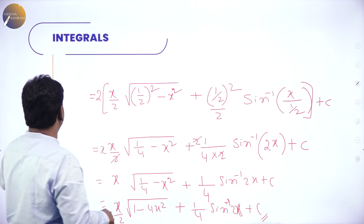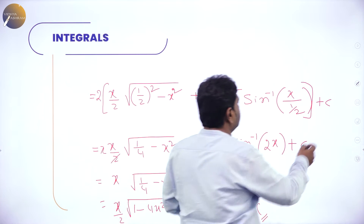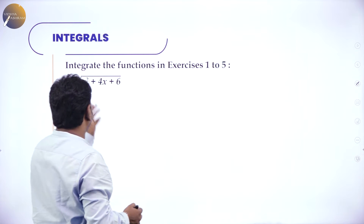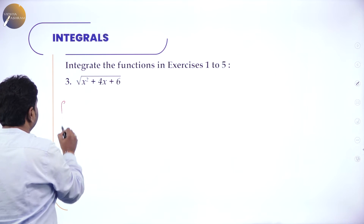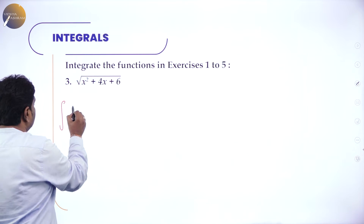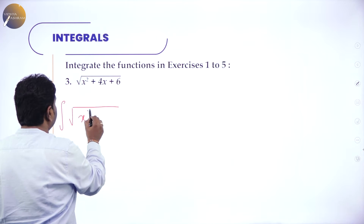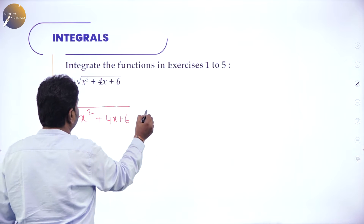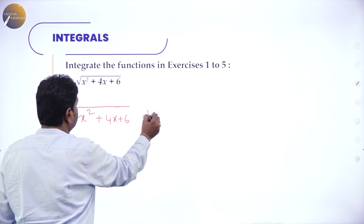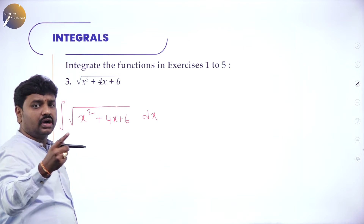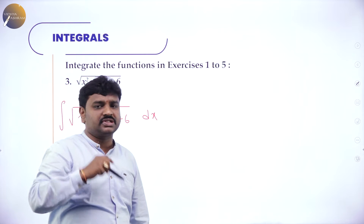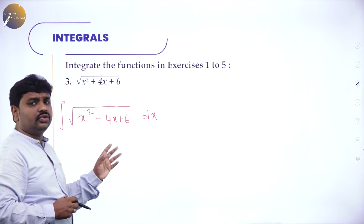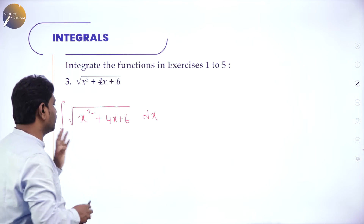Always write the problem in standard form — any one of the specific integrals nearest. So now we have ∫√(x² + 4x + 6) dx. The problem is not in the form of √(a² + x²) or √(x² - a²) or √(a² - x²), so first I have to reduce it using the method of completing the squares.